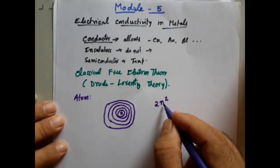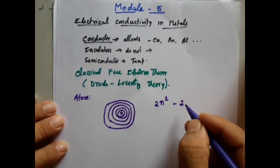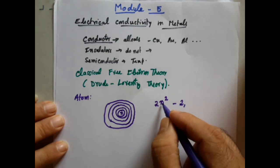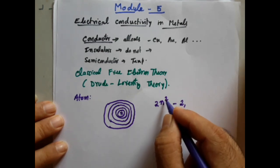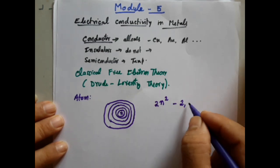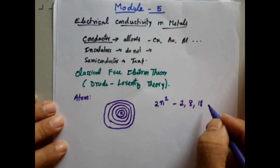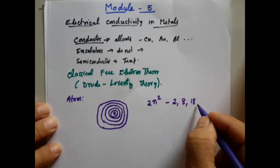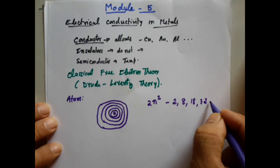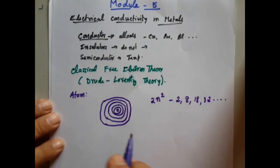When n equals 1, there are two electrons in the first orbit. In the second orbit, n equals 2, giving 2×2²=8 electrons. In the third orbit, 18 electrons. In the fourth orbit, 32 electrons. That is how the number of electrons are filled in the various orbits.